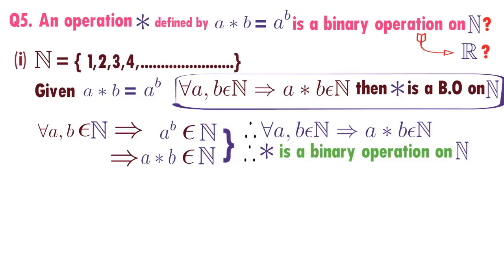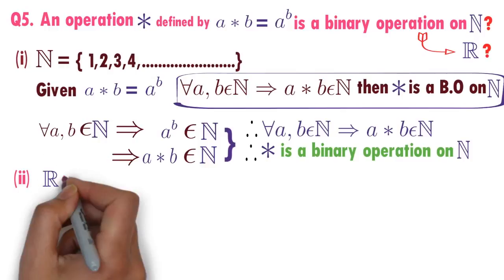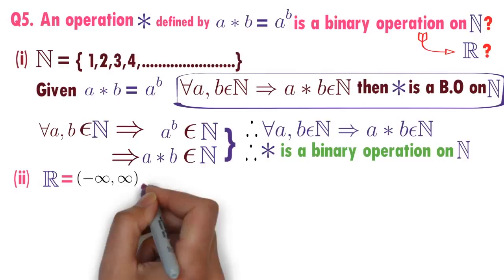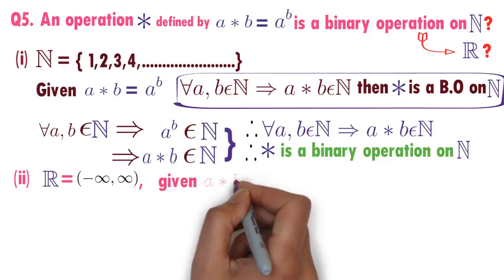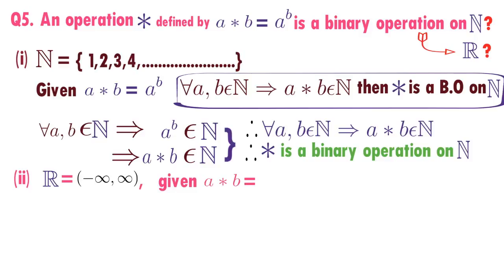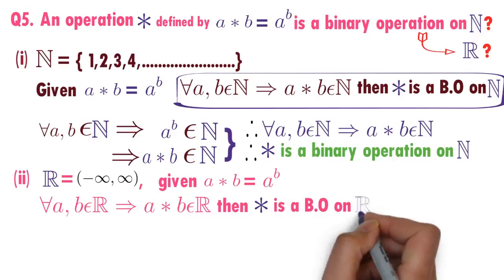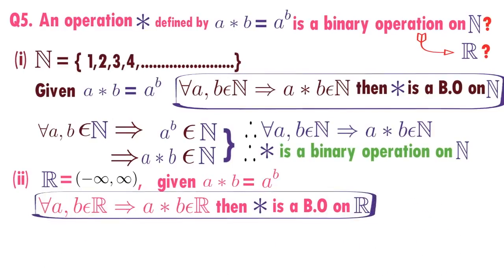Now I will check if star is a binary operation on set of real numbers or not. What are real numbers? All the numbers in between minus infinity to plus infinity are known as real numbers. In this question, how A star B is defined? A star B is defined as A power B. What we need to check? For every A comma B belongs to R implies A star B belongs to R, then star is a binary operation on set of real numbers.